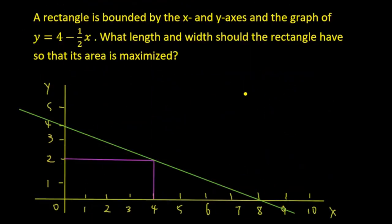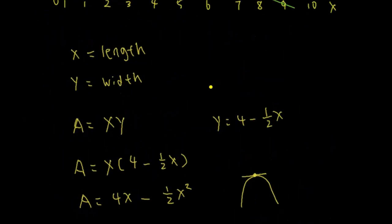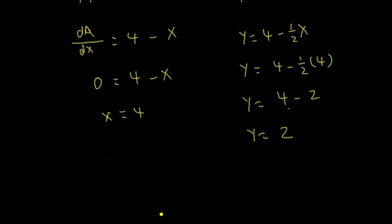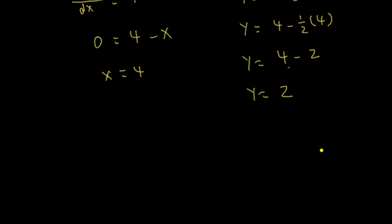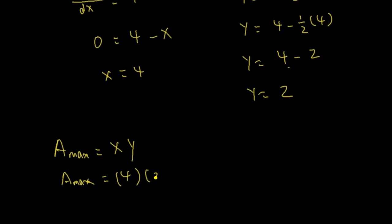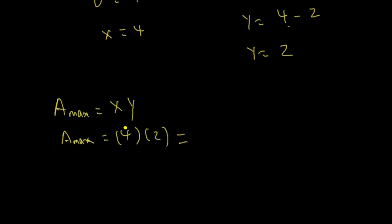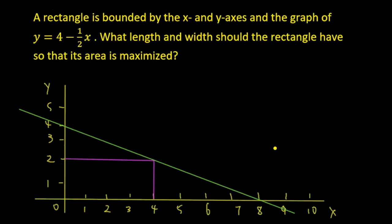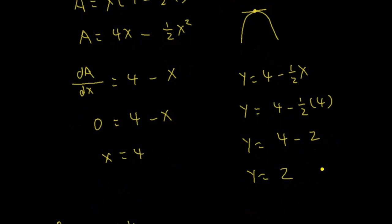The question asks what length and width the rectangle should have so that its area is maximized. The length is x and the width is y, so the length is 4 and the width is 2. That gives the maximum area of the rectangle. The maximum area is 2 times 4, which equals 8 square units. So the length should be 4, the width should be 2, to give the maximum area of 8 square units.